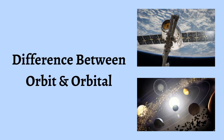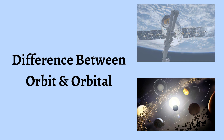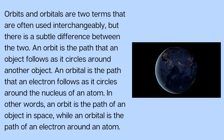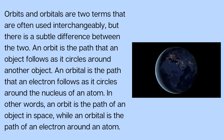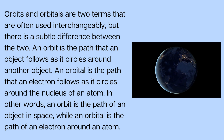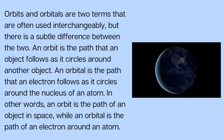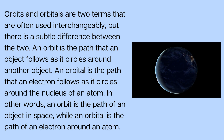Difference between Orbit and Orbital. Orbits and orbitals are two terms that are often used interchangeably, but there is a subtle difference between the two. An orbit is the path that an object follows as it circles around another object. An orbital is the path that an electron follows as it circles around the nucleus of an atom.